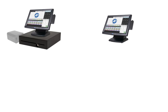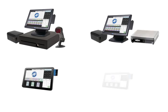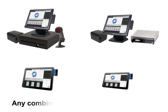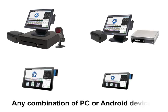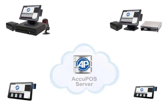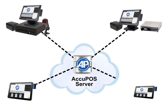AccuPause is the fastest POS solution in the industry and can be set up on any combination of PC or Android devices. This allows the freedom to process sales from anywhere in the world while maintaining secure, audited control over all cashiers, sales reps, and managers.